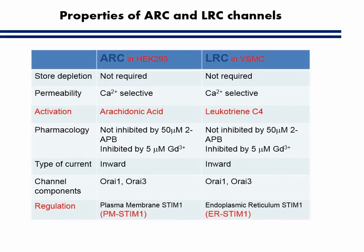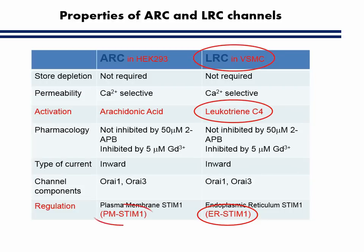This table lists the properties of ARC and LARC channels, which are largely similar with one exception. While endoplasmic reticulum STIM-1 (ER STIM-1) is necessary and sufficient for LARC channel activation in smooth muscle cells, plasma membrane STIM-1 is necessary for ARC channel activation in HEK cells.